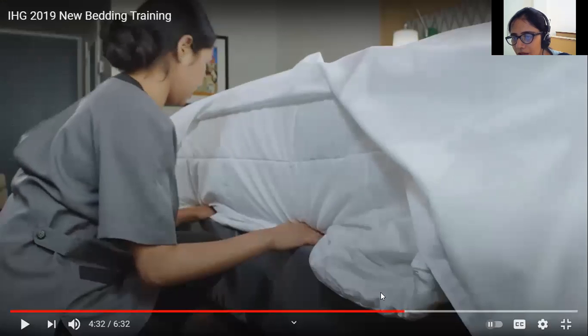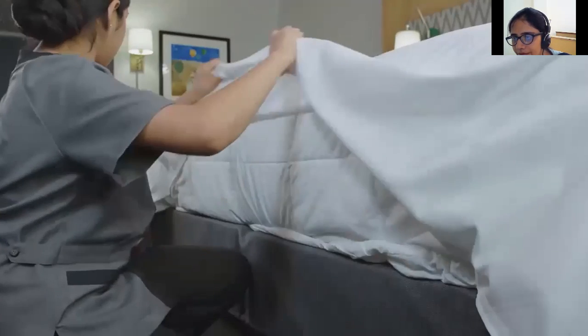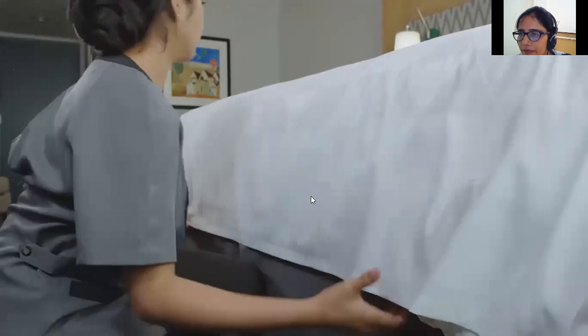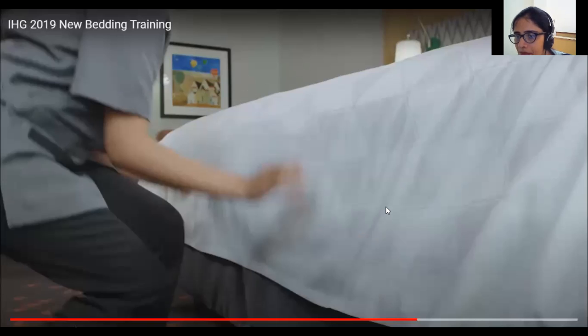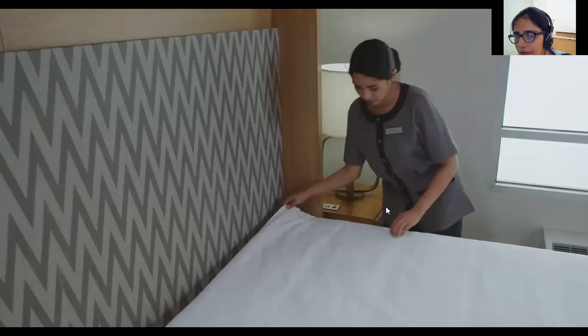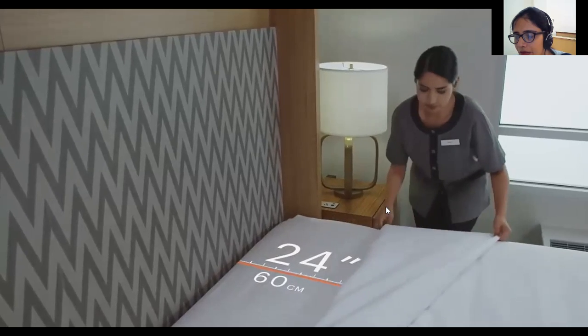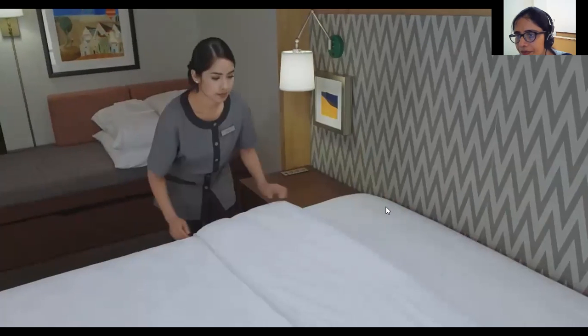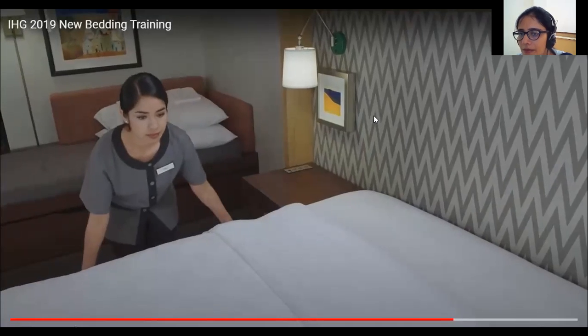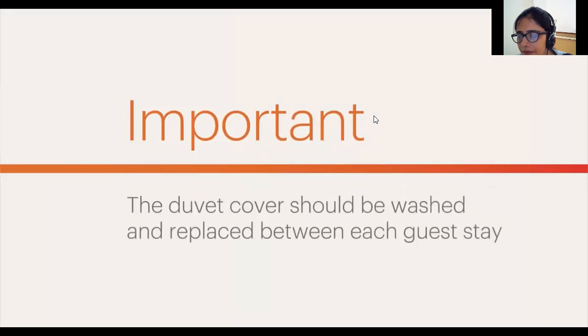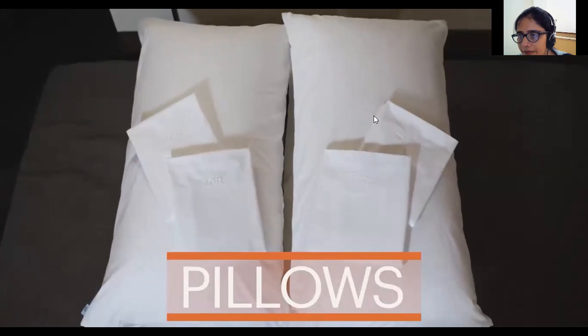Once the duvet insert is fully secured inside the cover, grab the top layer of the duvet, the insert, and the under-flap of the duvet cover with both hands. Lightly fluff the duvet to ensure all corners and sides of the insert are even and smooth, and make sure the duvet cover is centered on the bed. If necessary, it is permitted to tuck the underside of the cover and duvet insert under the mattress at the end of the bed to secure it — this may occur with smaller mattresses. Do not tuck the top layer at the end or sides. Fold the duvet cover back from the top one time, approximately 24 inches, leaving enough room for the pillows. It is important to note that the duvet cover should be washed and replaced between each guest stay.